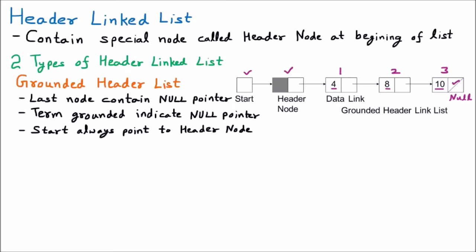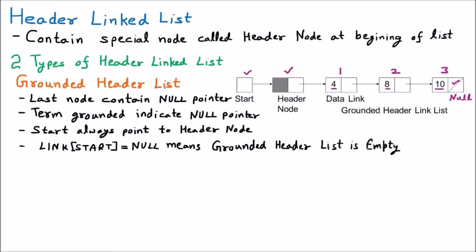In the grounded header list, the start always points to the header node, then afterward we have the first node. There is a term: if link[start] equals null, that means the grounded header list is empty. To understand this, we know that every node in the linked list has an info part and a link part. The normal nodes have an info part, and the header node also has an info part but it contains nothing.